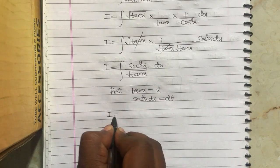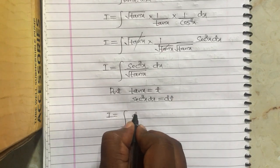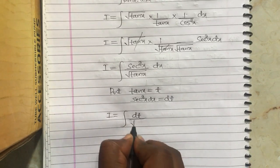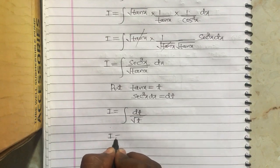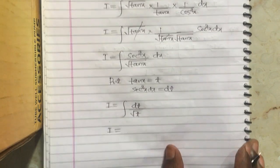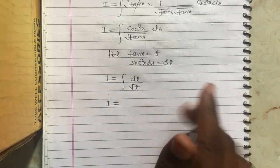Rewrite the integral. I equals integration of dt by root t, which will be 2 root t plus c.